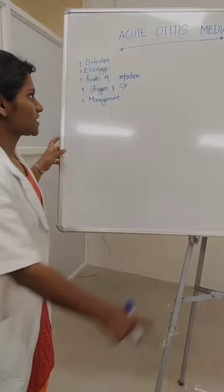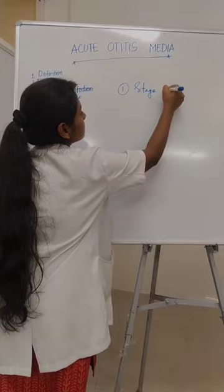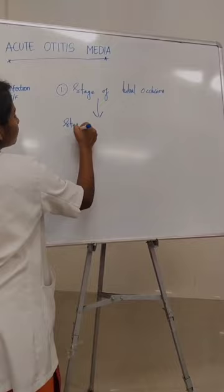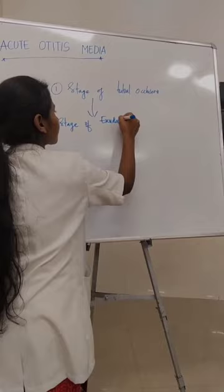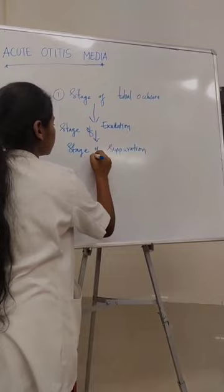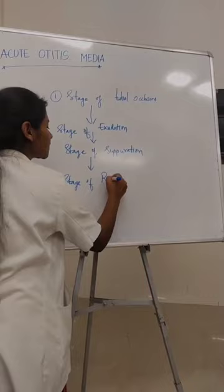Next, about the stages. The first stage is the stage of tubal occlusion, followed by the stage of exudation, the stage of suppuration, the stage of resolution, and finally the stage of complication.